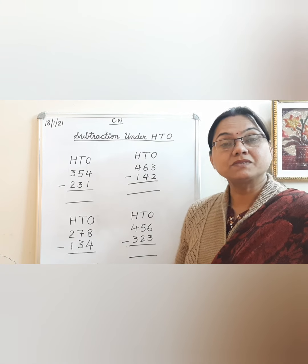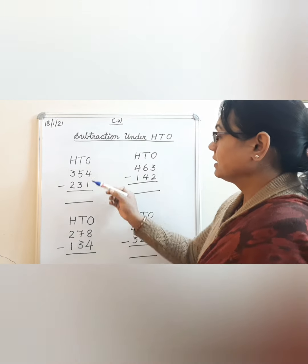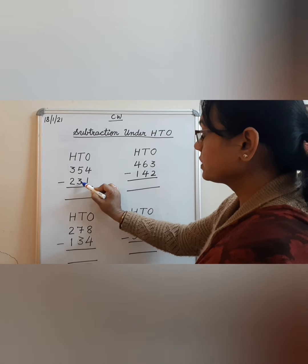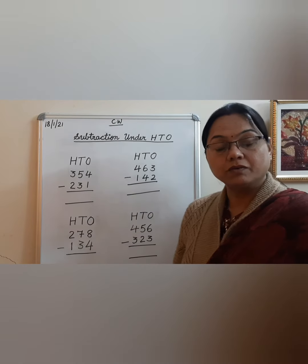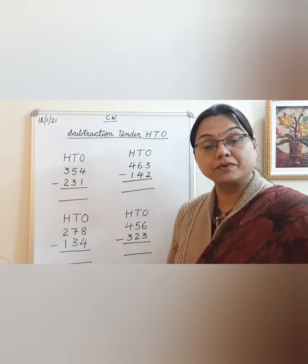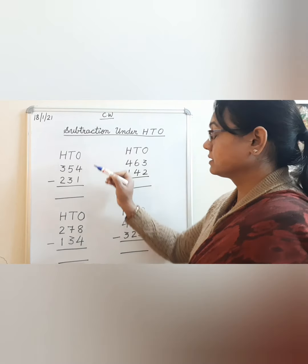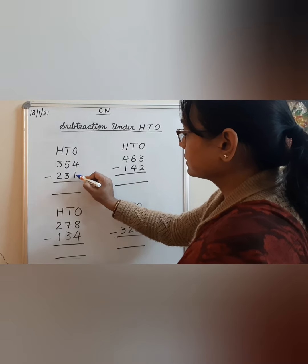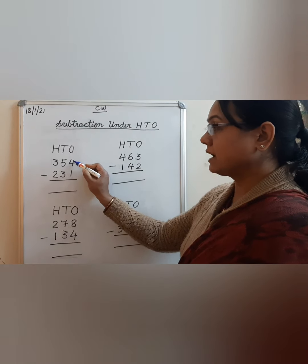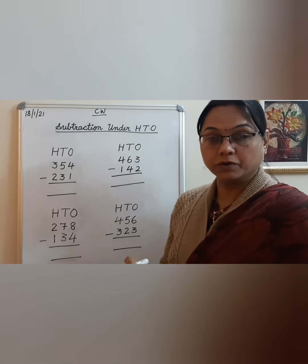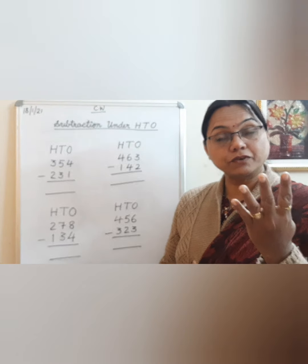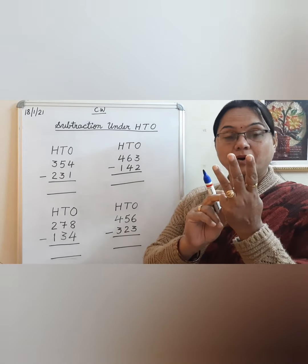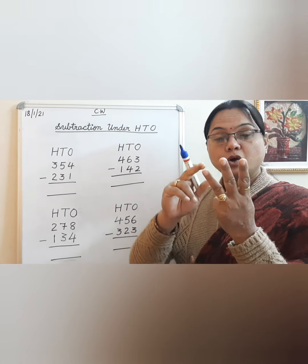Let us do some subtraction sums. Here you can see I have written 354 minus 231. We have to start from the ones place. Below, you can see 4 minus 1 is written. So we have to subtract 1 from 4. Take out four fingers and subtract 1 — how many are left? 1, 2, and 3.